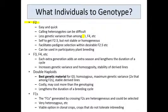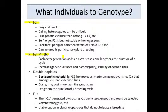These segregating families can actually be quite useful in participatory plant breeding. The next type of individuals you can look at are F3s and F4s — in other words, more highly inbred individuals. Each generation adds an extra season and therefore lengthens the duration of a cycle of genomic selection. But each generation of inbreeding also increases your genetic variance, the homozygosity, and the stability of the derived lines, so there are some real advantages there.